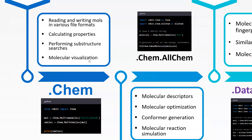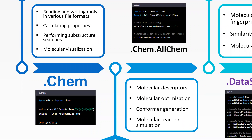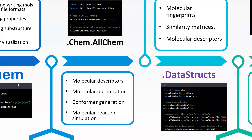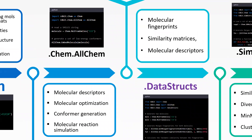The first library is rdkit.Chem, which is the main library of RDKit. It provides basic cheminformatic functionality for working with molecular structures, including reading and writing molecules, handling various file formats, calculating molecular properties, and performing substructure searches. To access it, you call: from rdkit import Chem. From there you can enter SMILES strings, convert to different file formats, calculate molecular properties, and visualize molecules.